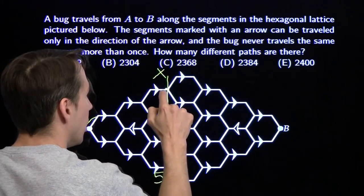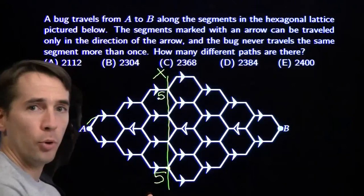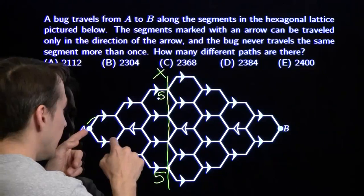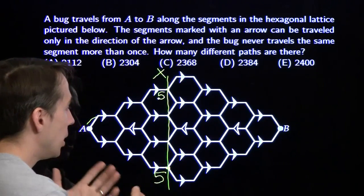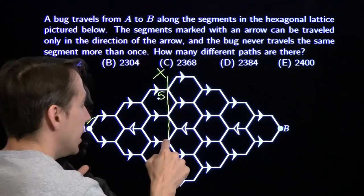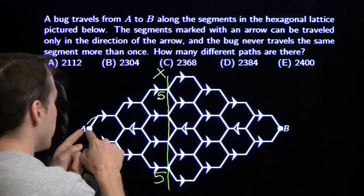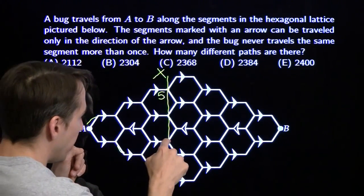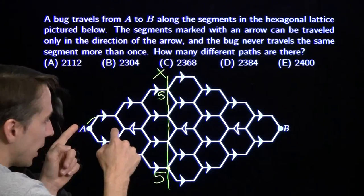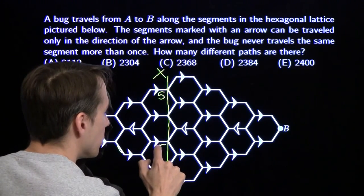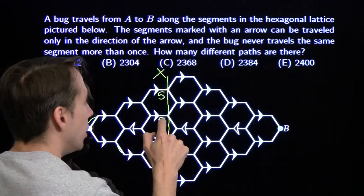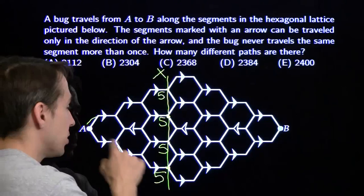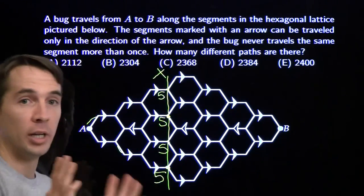By symmetry, there are five ways to reach the top point of level X as well. For the two inner points, the same logic applies: two ways starting along the bottom, and three ways starting upward — giving five ways to each inner point too. So each of the four points at level X can be reached in exactly five ways for the first time.